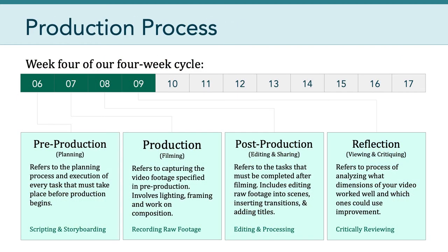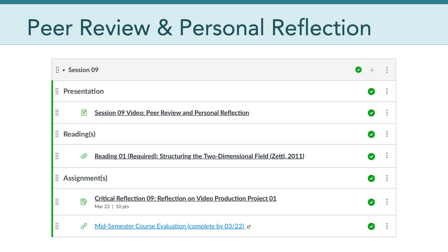If we look at our production process map, we've reached week four of four. This means we'll spend this week emphasizing peer review and personal reflection. The goal, of course, is to help us learn by looking back on the strengths and weaknesses of our first projects. Keep in mind that next week is spring break, so we'll have a little bit of a lag in the schedule. For this reason, I wanted to give you a bit of an overview as to where we're going over the next two weeks. In session nine, we're all about peer review and personal reflection.